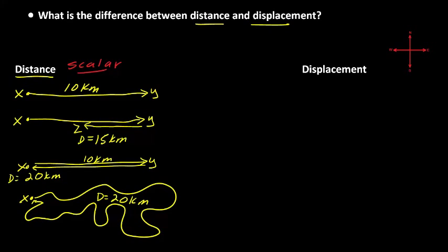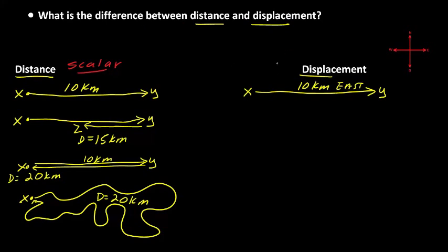Now let's take a look at displacement, using the same scenarios. In the first scenario, we started at our origin, point X, and traveled all the way to point Y — a distance of 10 kilometers. But the displacement is not just 10 kilometers. The displacement, in this case, is 10 kilometers east. Displacement, unlike distance, is a vector measurement.